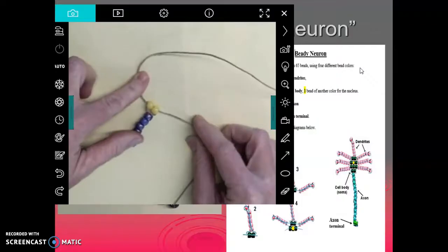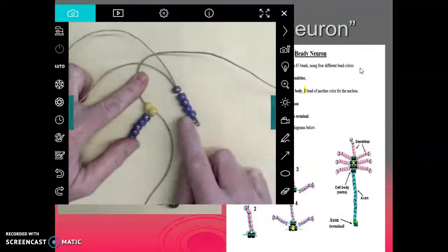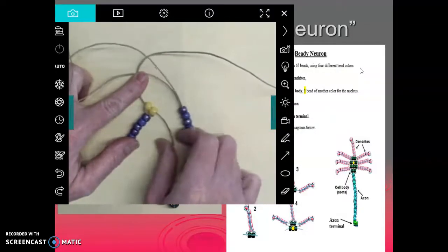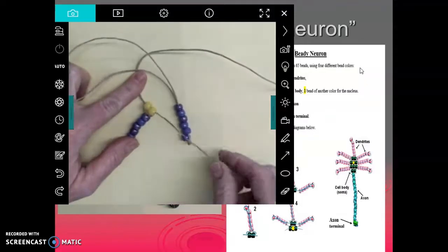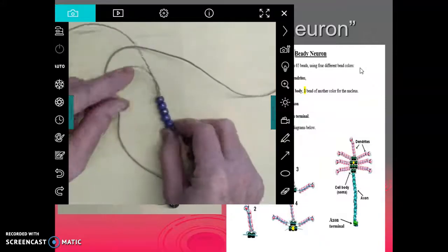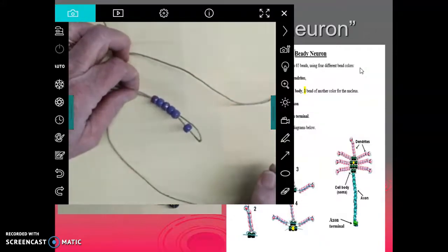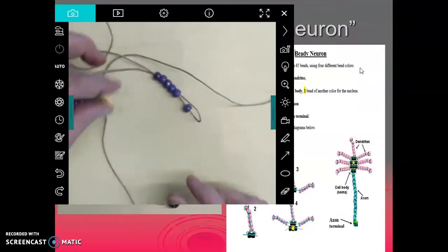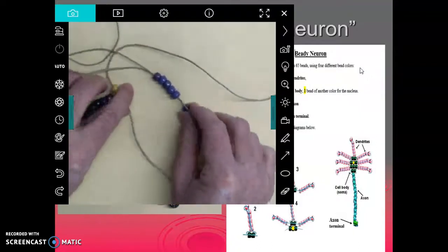Now what you're going to do next is you're going to take the same thing you did here. You're going to take six of your purple and you're going to put them on one of your strings. And then just like we did before, you're going to skip one at the end and come back through the other five and tighten it down all the way down here.